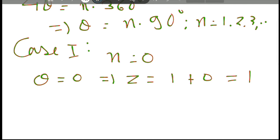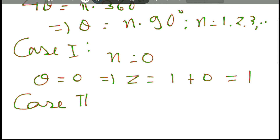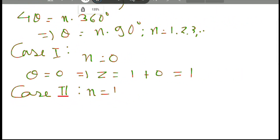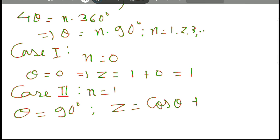That implies z equals cos 0 plus i times sine 0, which gives z equal to 1. Case 2: n equal to 1. We get theta equal to 90 degrees, so z equals cos 90 degrees plus i sine 90 degrees. Cos 90 degrees is 0 and sine 90 degrees is 1, so z equals i.